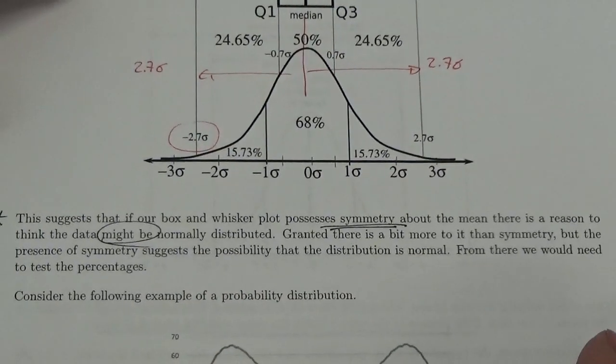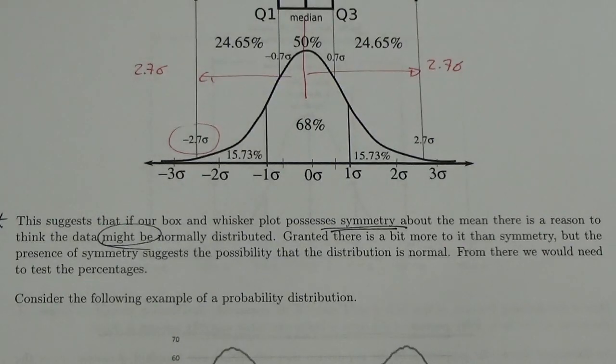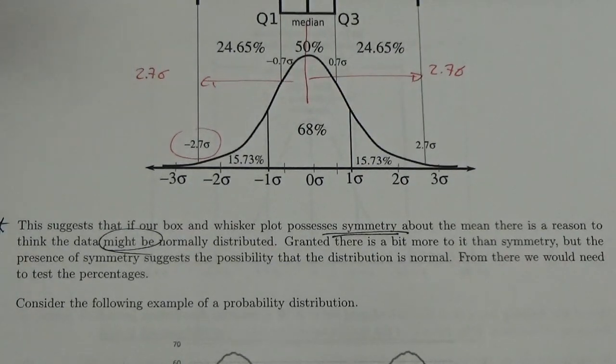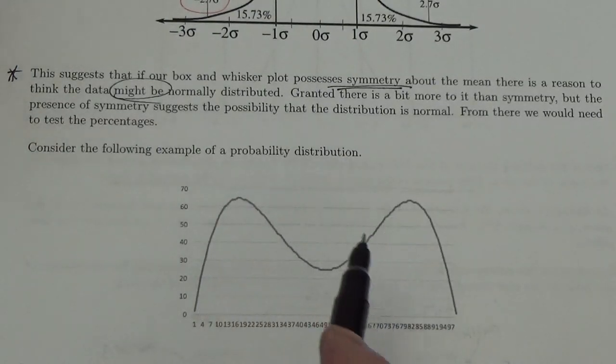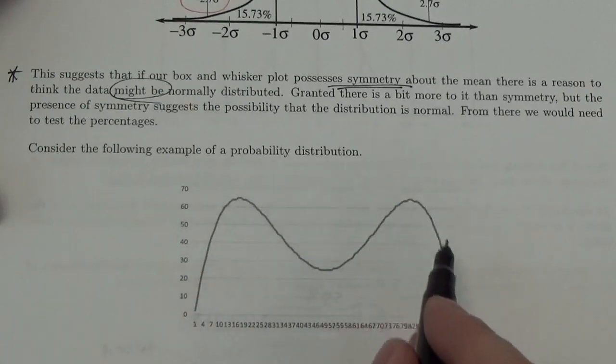However, that's not necessarily the case. And I'm going to show you an example of a distribution that is actually going to have a very similar box and whisker plot that will be symmetric, but I'm still not normally distributed here. I've got two peaks in the data.